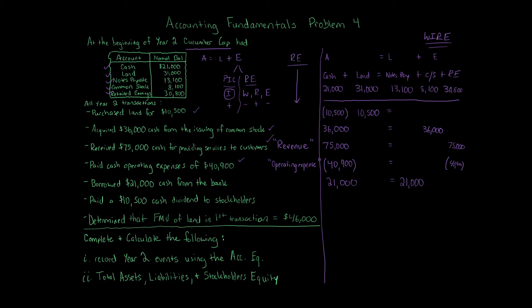Transaction 6: Paid a $10,500 cash dividend to stockholders. Cash goes down by $10,500. No effect to Land or Notes Payable. Common Stock is not affected — dividends go into Retained Earnings as withdrawals (the W in WIRE). So Retained Earnings decreases by $10,500. The account label in the side column is Dividends (or Cash Dividends).